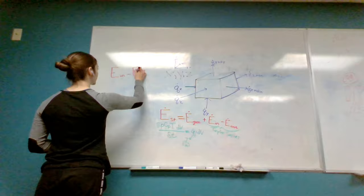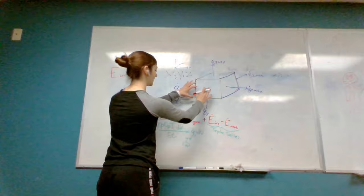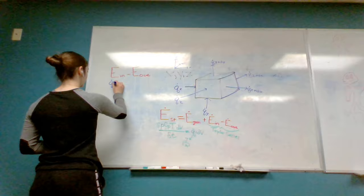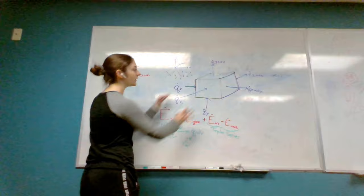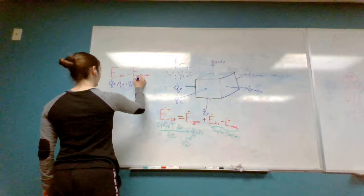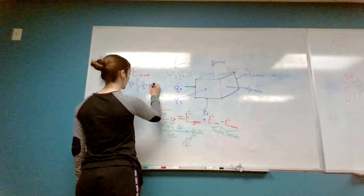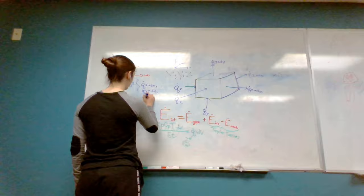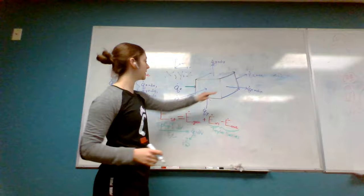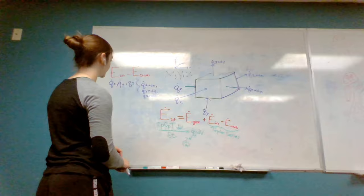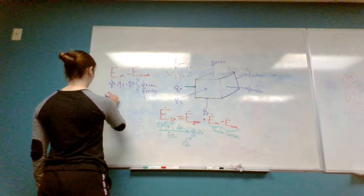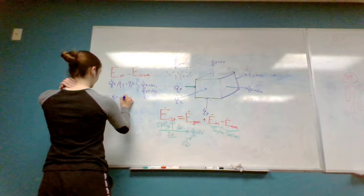Our energy flow in minus our energy flow out is essential. Our energy flow in, as discussed before, is Qx, Qy, and Qz — all inflows of energy into our volume. Our energy flow out is Qx plus dx, Qy plus dy, and Qz plus dz. All of this is represented in our image: heat flow in, heat flow out.